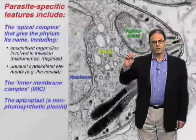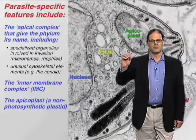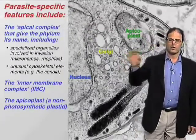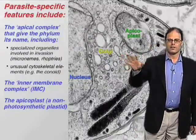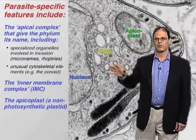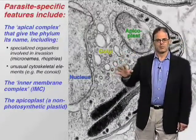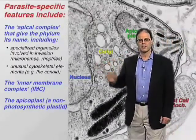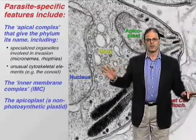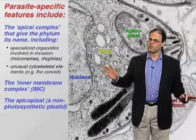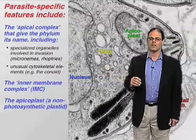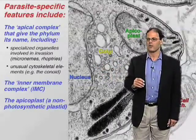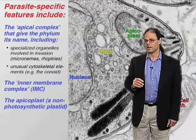Parasites... so all of these organelles that we've described — the nucleus, the Golgi apparatus, the endoplasmic reticulum, mitochondria, even plastids — are generic organelles that we see throughout the eukaryotic domain.